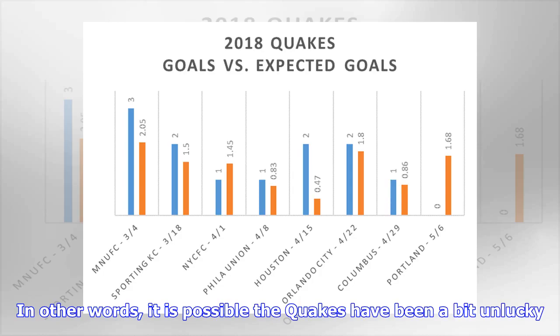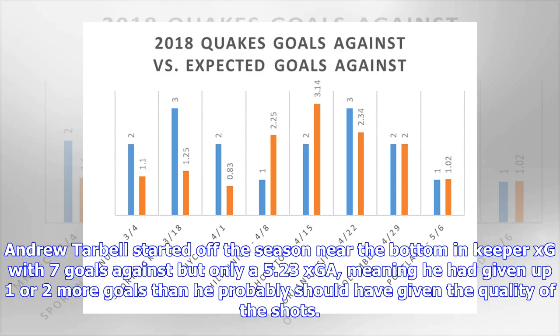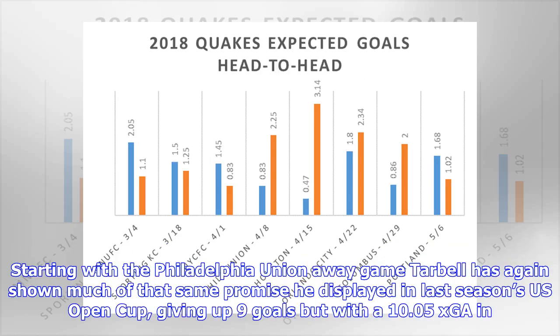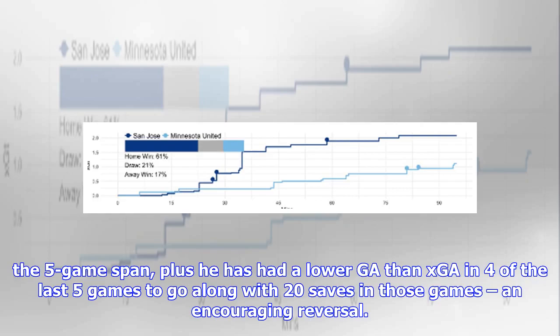In other words, it is possible the Quakes have been a bit unlucky. Andrew Tarbell started off the season near the bottom in keeper xG with seven goals against but only a 5.23 xGA, meaning he had given up one or two more goals than he probably should have given the quality of the shots. Starting with the Philadelphia Union away game, Tarbell has again shown much of that same promise he displayed in last season's U.S. Open Cup, giving up nine goals but with a 10.05 xGA in the five-game span. He has also had a lower GA than xGA in four of the last five games, along with 20 saves in those games — an encouraging reversal.